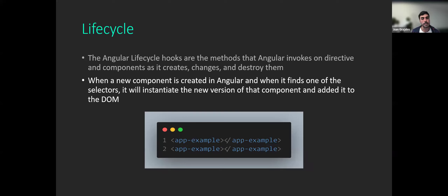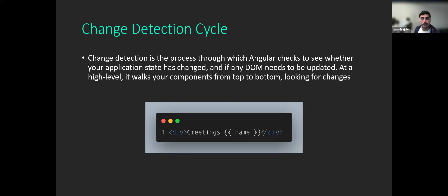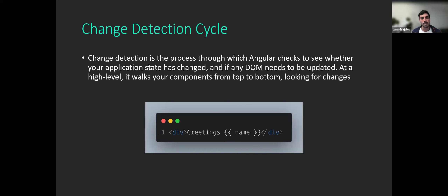Angular allows us to tap into these events as they're happening. We'll see examples like ngOnInit, ngOnChanges, and ngOnDestroy. Angular's change detection is a process through which Angular checks whether your application state has changed and if the DOM needs to be updated. At a high level it walks through your components from top to bottom looking for changes. Angular runs the change detection cycle on every event that may result in a change to the DOM — an input change, a DOM event, a timer event, or an HTTP request.